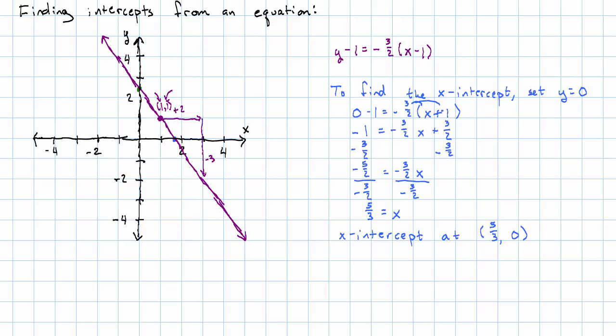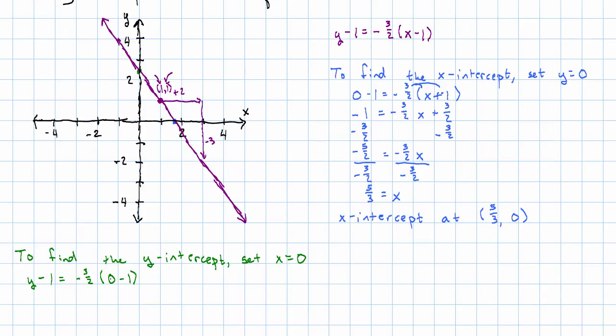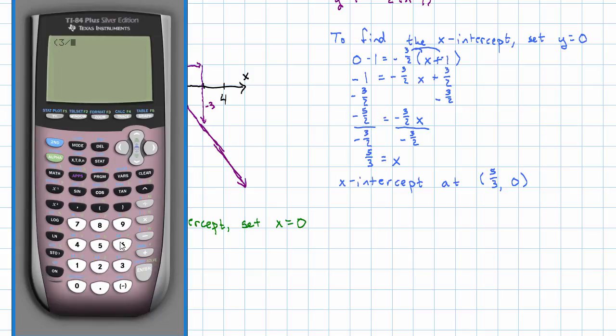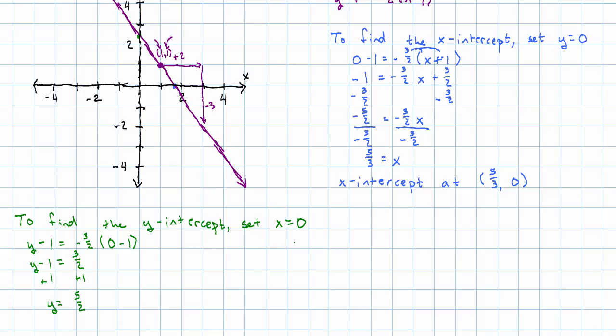To find the y-intercept, we do something similar. We set x equal to 0. And so we have y minus 1 equals negative 3 halves times 0 minus 1. Working out the arithmetic on the right, y minus 1 equals positive 3 halves. Add 1 to both sides and we get y equals 3 halves plus 1 is 5 halves. So our y-intercept is at x equals 0, y equals 5 halves.